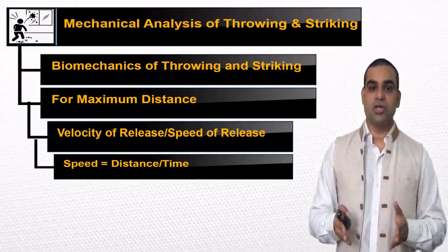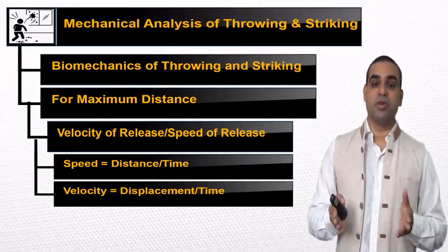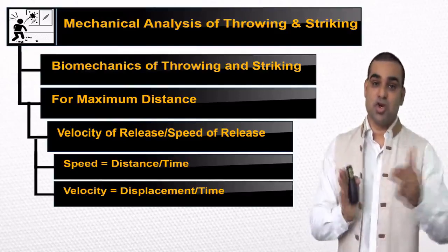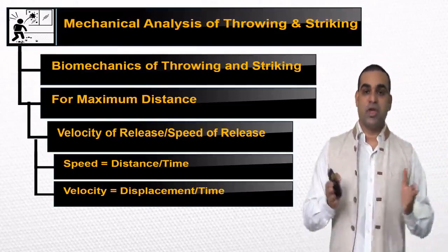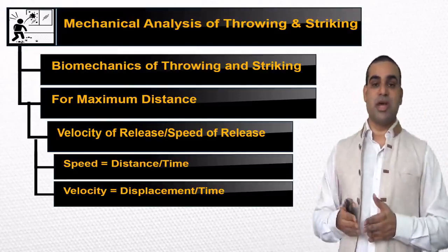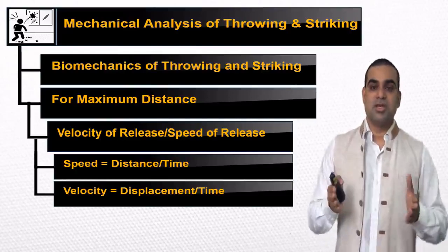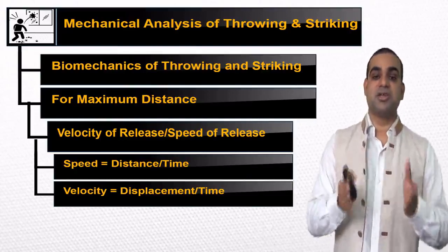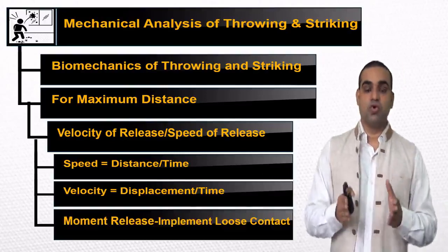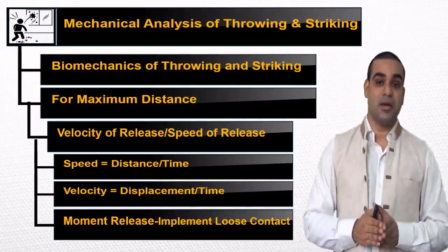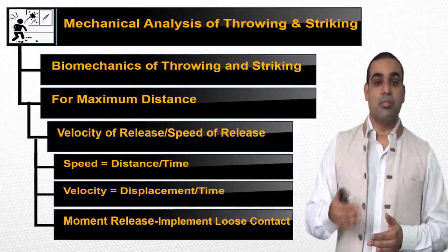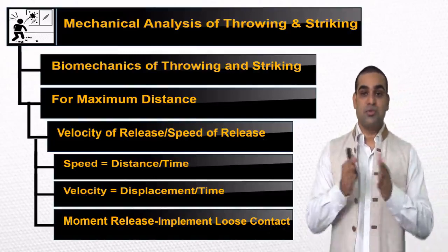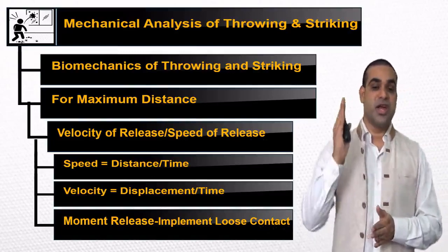To understand velocity, we must know what displacement is, because velocity is the rate of change of displacement. Displacement is the shortest distance between two end points. So if we equate velocity as displacement divided by time taken, the direction is involved. Everything else remains the same — only the direction is involved. Movement release: as the object gets released from the hand, we can capture that moment by photographic techniques, using cinematography, to capture the moment when the object is released.